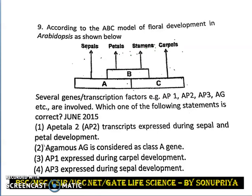We have to see which class of genes is responsible for these whorls. Our first statement is: APETALA2 transcript is expressed during sepal and petal development. Yes, that is correct. For sepal formation, we need AP1 and AP2. For petal formation, we need class A gene as well as class B gene — from class A, APETALA2 is responsible, and from class B, APETALA3 and PISTILLATA are responsible. So APETALA2 is expressed during both sepal and petal development — this is the correct statement.